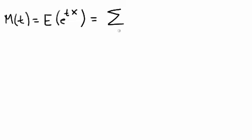Okay, the moment generating function is, by definition, the expected value of e to the tx, which for a discrete random variable is the sum over the support,